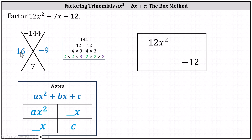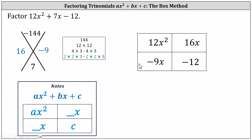Let's use the factors of positive 16 and negative 9. Notice 16 times negative 9 is negative 144, and 16 plus negative 9 is positive 7. Which means for the middle term 7x, we will use 16x and negative 9x.